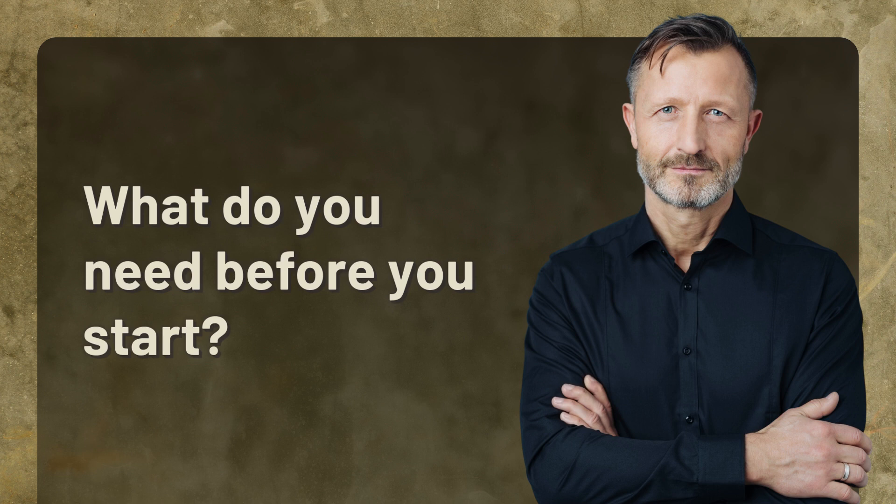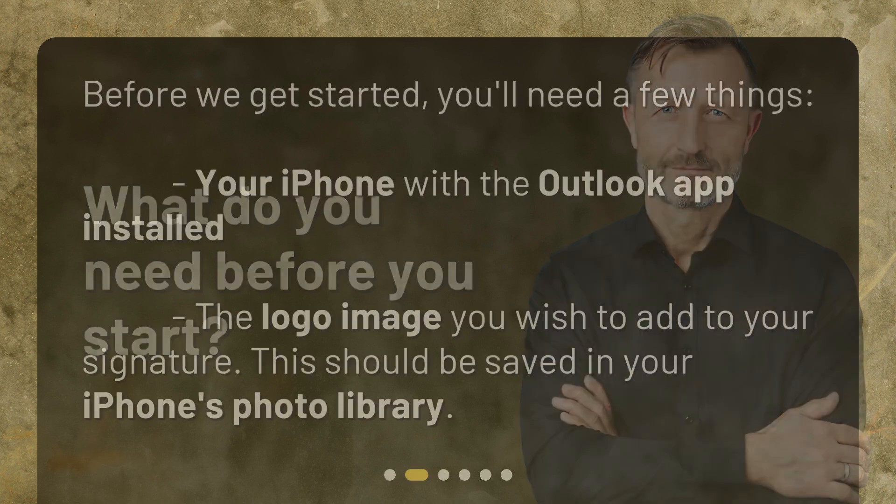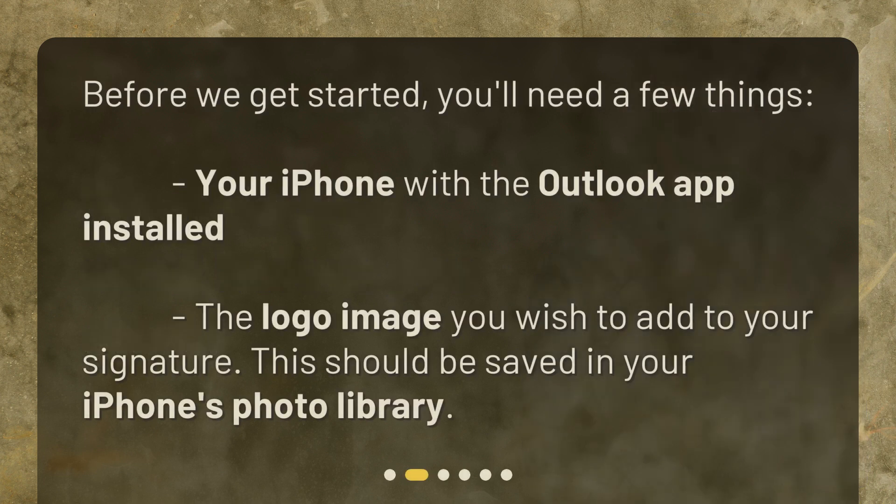What do you need before you start? Before we get started, you'll need a few things: your iPhone with the Outlook app installed, and the logo image you wish to add to your signature. This should be saved in your iPhone's photo library.